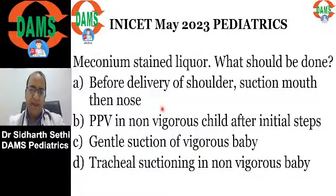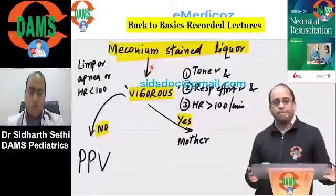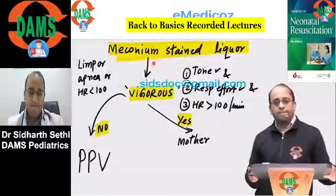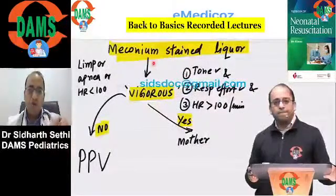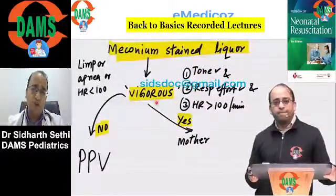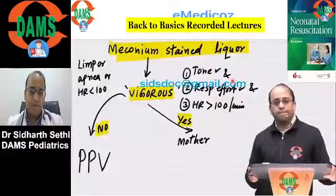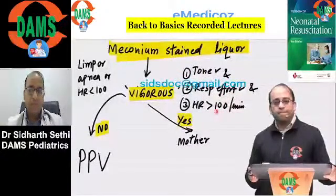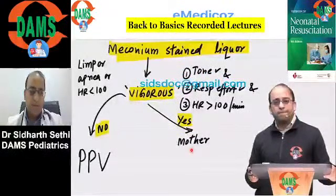Regarding meconium-stained liquor — intrapartum suction has been abandoned for the last decade. According to new guidelines, you need to assess whether the baby is vigorous. Vigorous means good tone, good respiratory effort, and heart rate more than 100 per minute. If the baby is vigorous, you may go for gentle suction only.